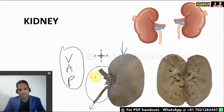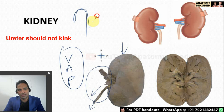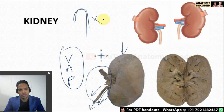For medial-lateral orientation, the hilum is on the medial aspect. For superior-inferior, the ureter is important — it should be directed downwards in a smooth manner. If held upside down, the ureter will kink upward. This kinking should not happen; the ureter should smoothly come down. So for superior and inferior, we confirm the ureter is directed downwards without kinking.